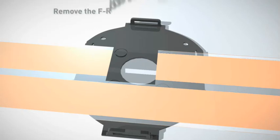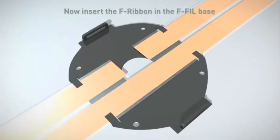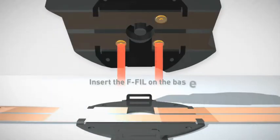We strongly recommend that you remove the F-ribbon transparent plastic cover to make a correct connection. Do not cut all the F-ribbon. Insert the F-ribbon in the F-FIL base. Insert the F-FIL on the base rigid fin and press PUSH until you hear a click.